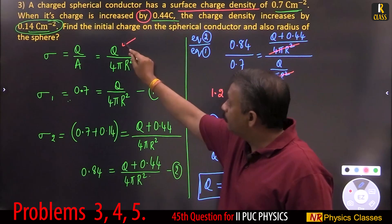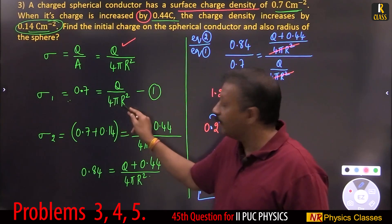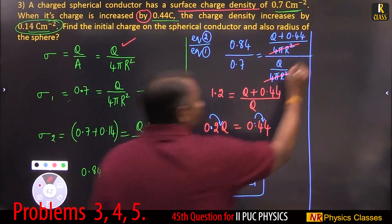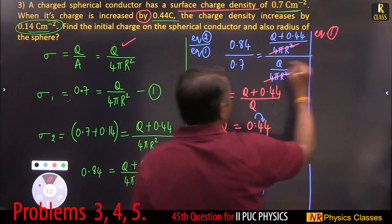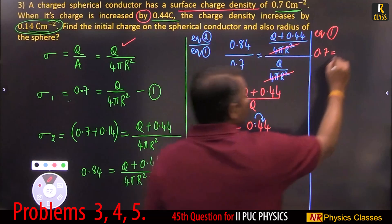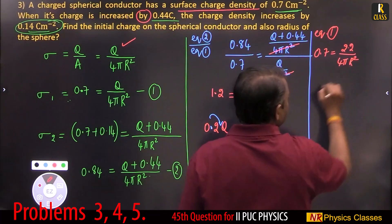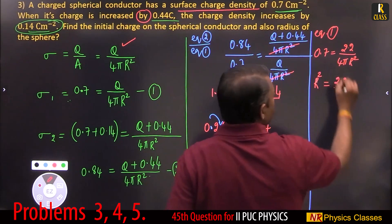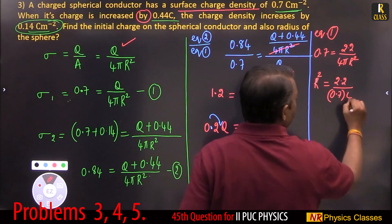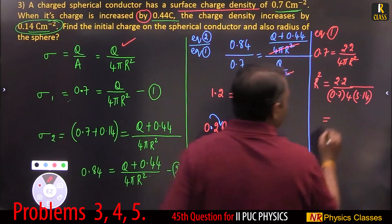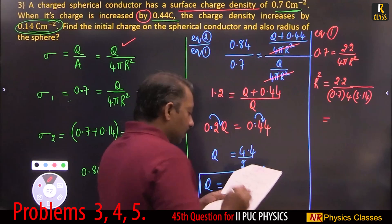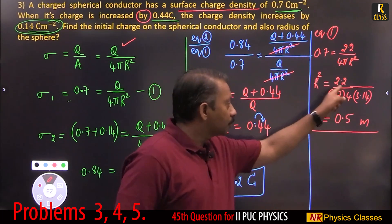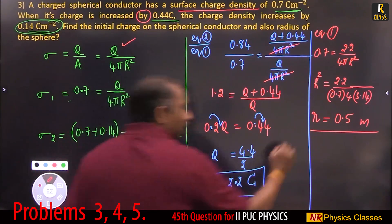So we found the charge Q equals 2.2 coulombs. Using sigma from equation 1: 0.7 equals 2.2 divided by 4 pi r squared. Therefore r squared equals 2.2 divided by (0.7 times 4 times 3.14). Simplify, take the square root, and the radius turns out to be 0.5 meter.